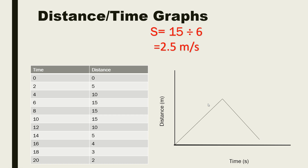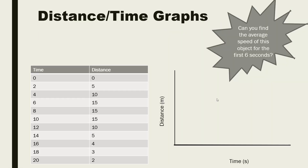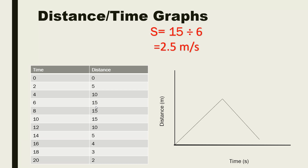Suppose I ask you to find the average speed for this object in the first six seconds. We have a data table with time and distance, and in the first six seconds this object has covered 15 meters. To calculate average speed, we do distance divided by time: 15 divided by 6 gives an average speed of about 2.5 meters per second. We can interpret graphs and also calculate speed, velocity, and even acceleration from them.